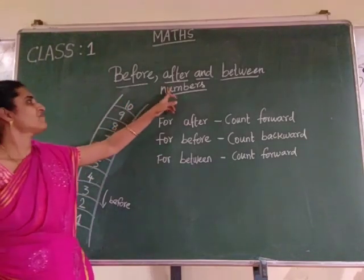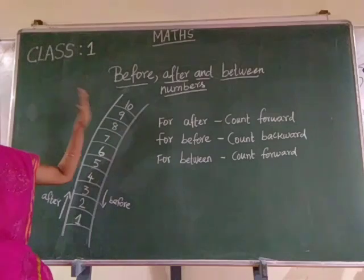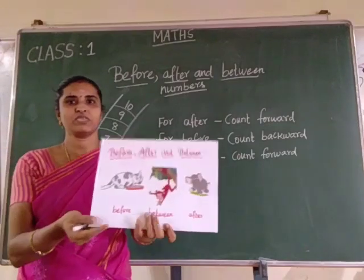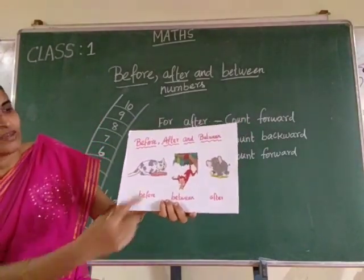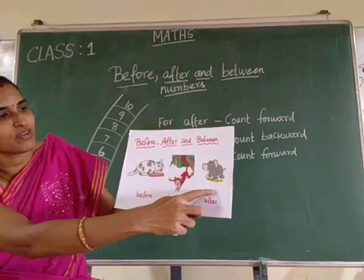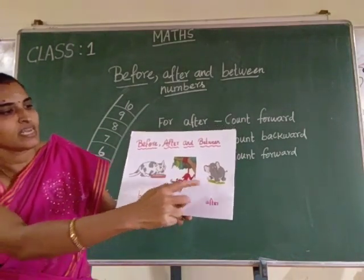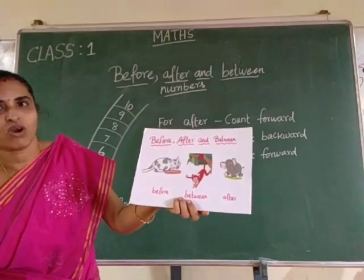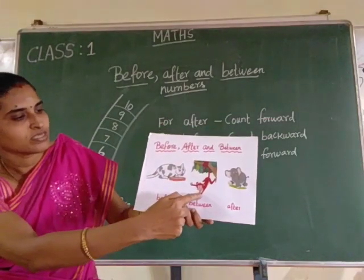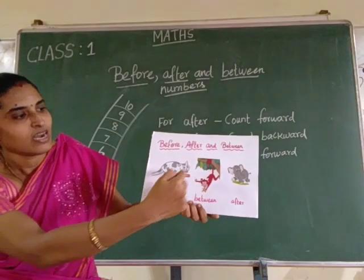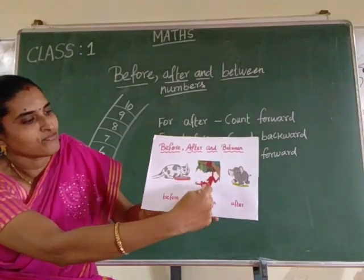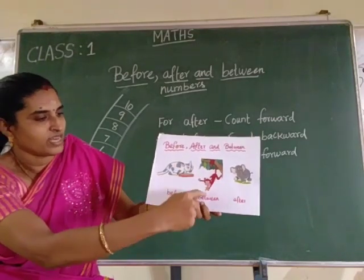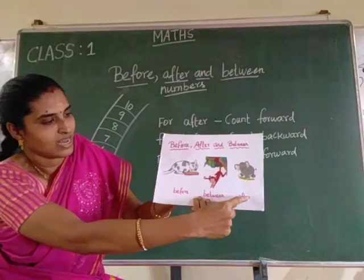Before, after and between numbers. To understand this, I am going to tell you a story. See this picture. Here, cat, monkey and elephants are there. Cat, monkey and elephants are friends. They are going to the park. While walking, cat walks before the monkey, and the elephant walks after the monkey. And where is the monkey? The monkey is between cat and the elephant.